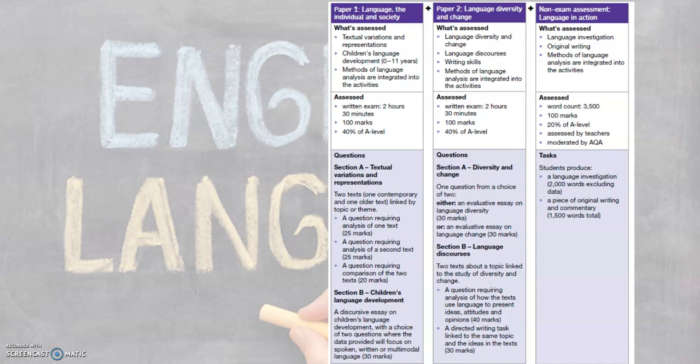We also study — and this is a lot of people's favourite part of the course — children's language development from birth through to the age of 11. Because people have that experience of acquiring language, people find it really fascinating. As well as studying the development of spoken language, we also study early literacy: how children learn to read and how they learn to write, and those early sounds, those early words, and then those early structures — exploring lots of theories and ideas about how that language develops for a child.